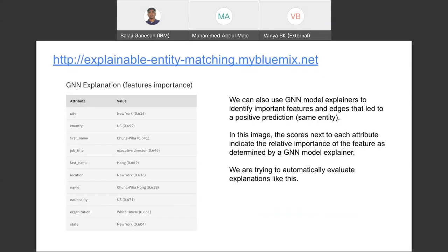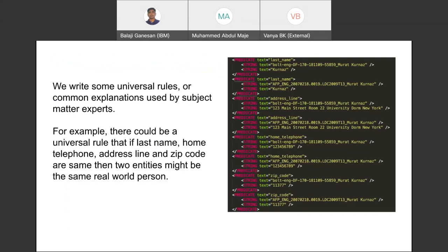So the GNN explainer basically gives the important nodes and attributes with a score attached to them. And we are trying to automatically evaluate explanations such as this. So we can write universal rules or common explanations by subject matter experts just as similar to creating an ontology. So for example, there could be a universal rule that if last name, home address, telephone number, and zip code are the same, then the two entities might belong to the same real world person. Using rules like this by subject matter experts would be less expensive than trying to evaluate all the explanation by an end user.